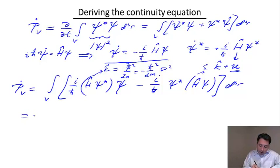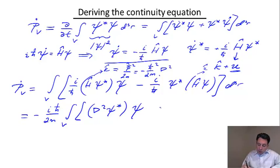what I have is minus iℏ/2m, which I can factor out outside the integral. And in the brackets, I'm going to have the Laplacian, ∇² Ψ*, times Ψ, minus Ψ*, ∇² Ψ.